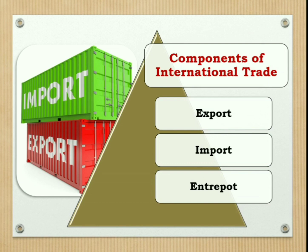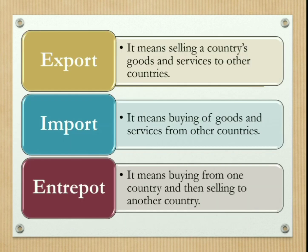The components of international trade basically comprise export, import, and entrepot. Export means selling a country's goods and services to other countries, and exports cause an inflow of foreign exchange. Import means buying of goods and services from other countries, and imports cause an outflow of foreign exchange. Entrepot is a combination of import and export — buying from one country and then selling to another country.